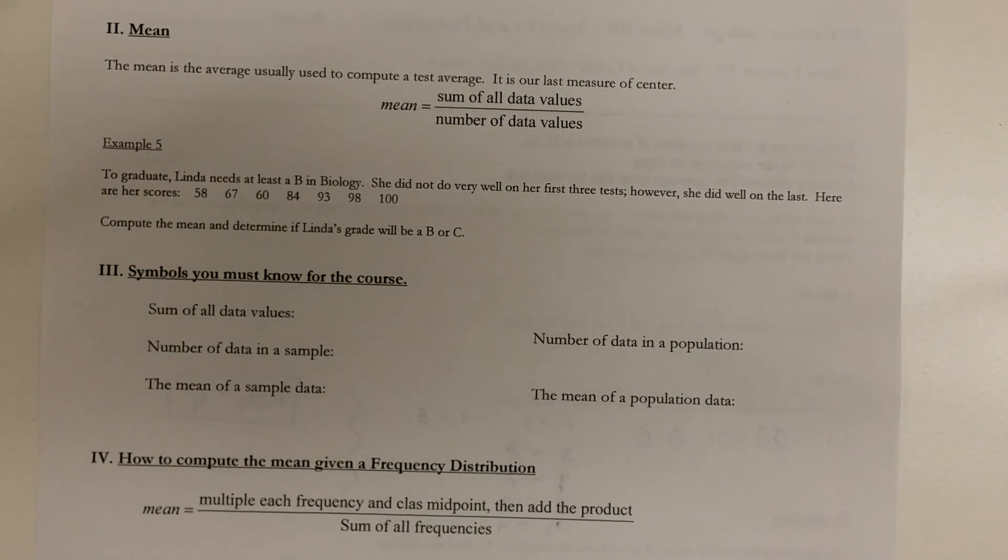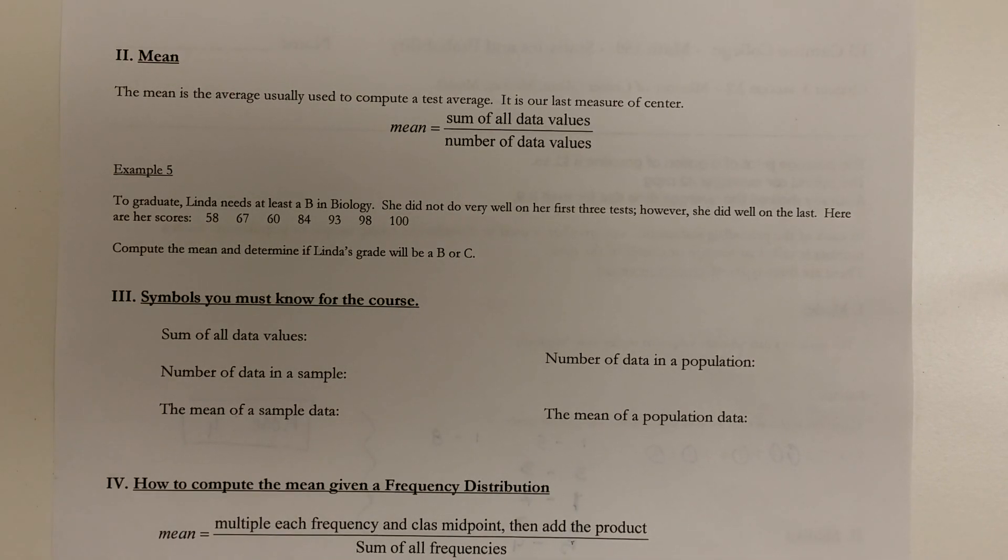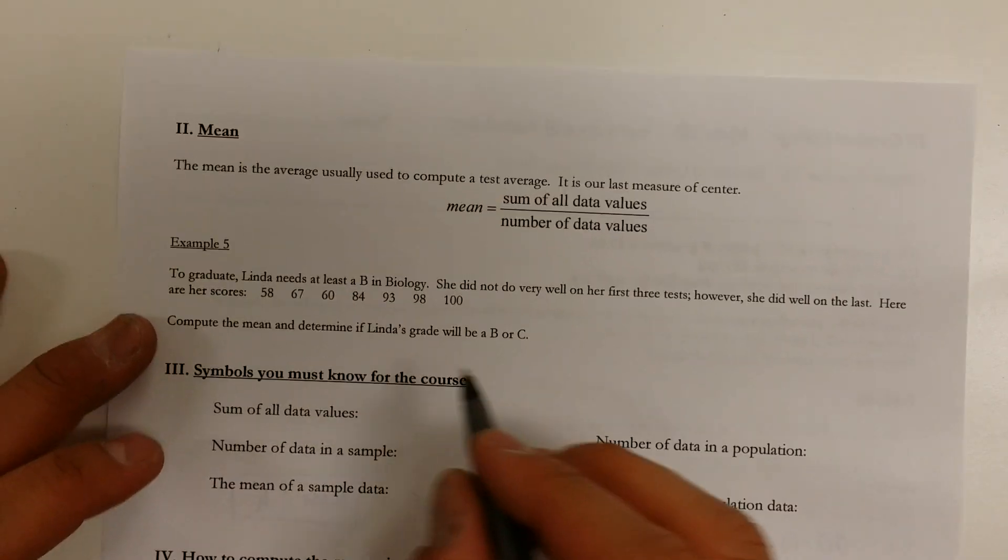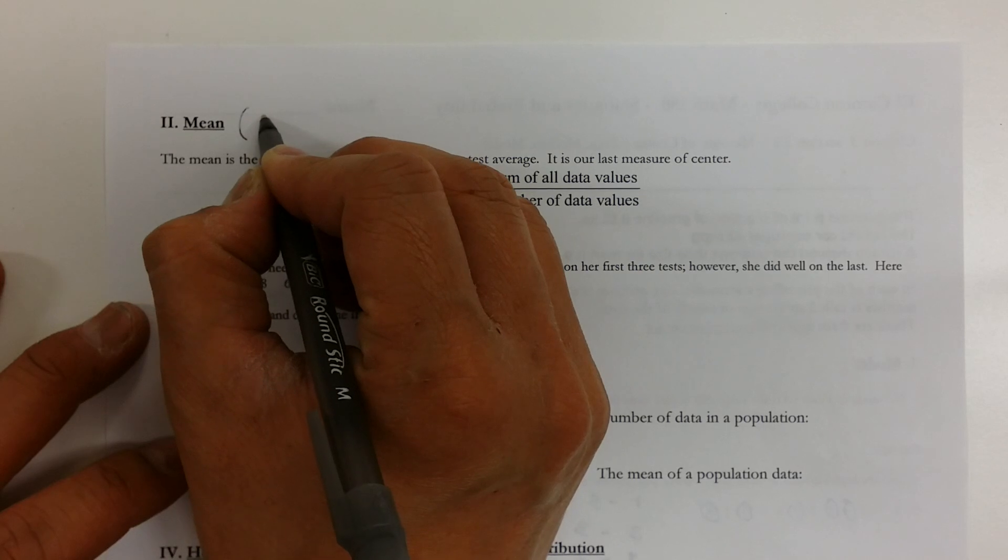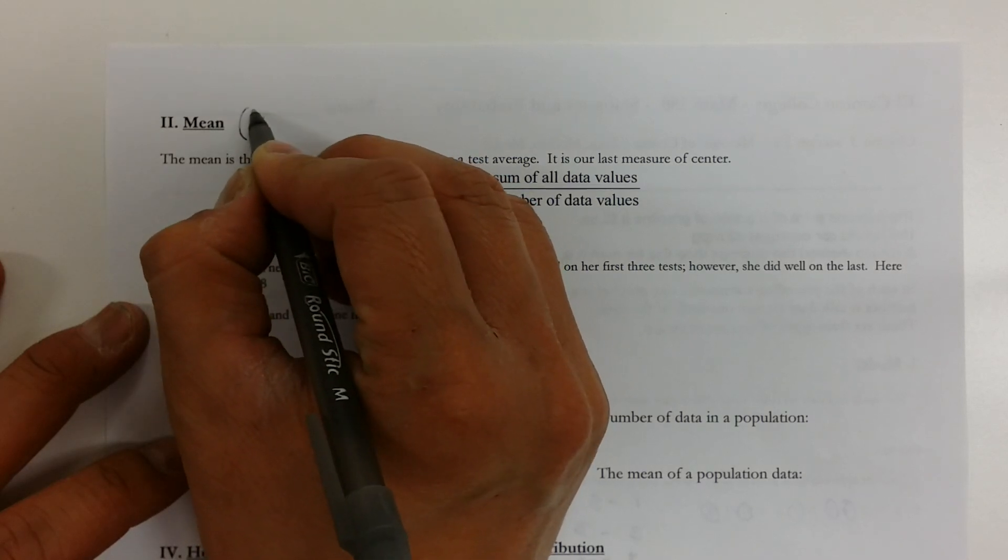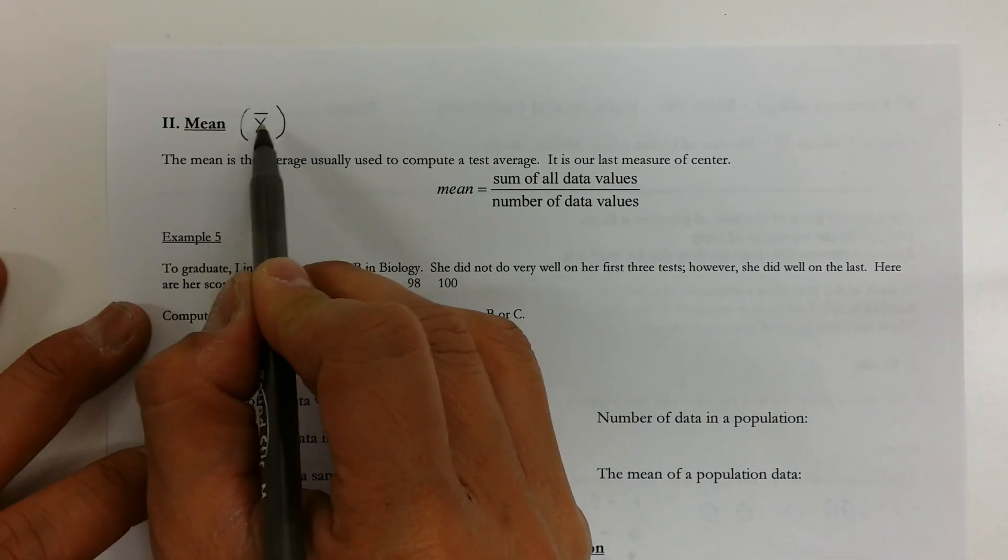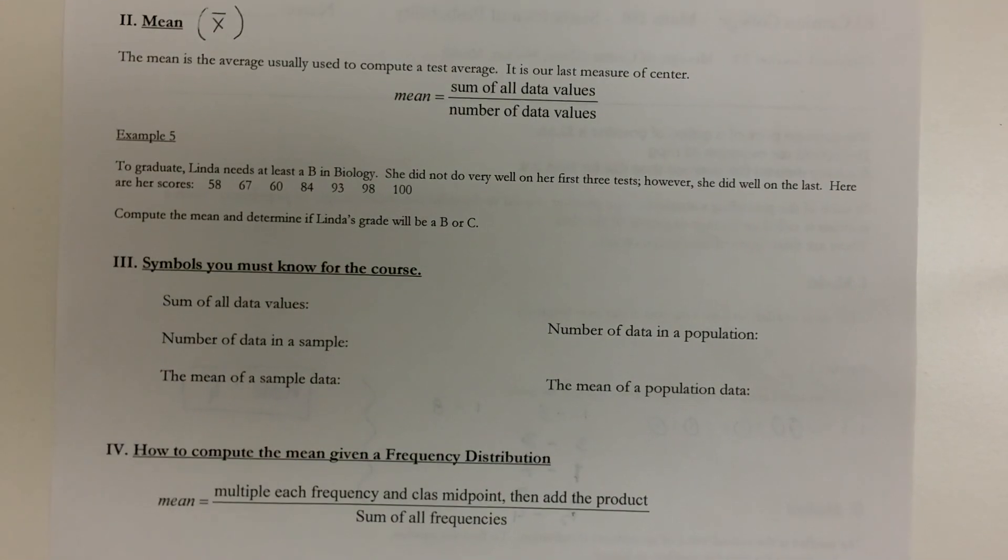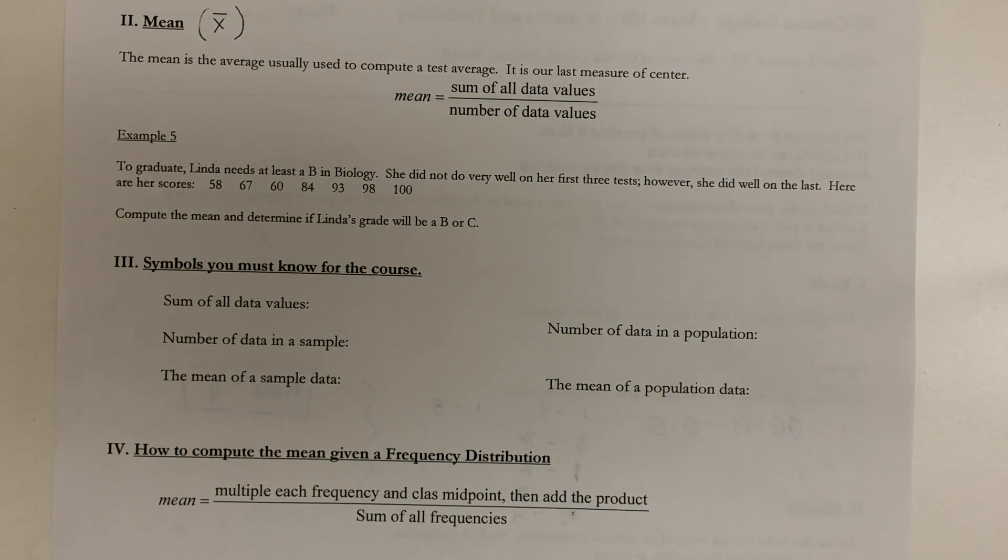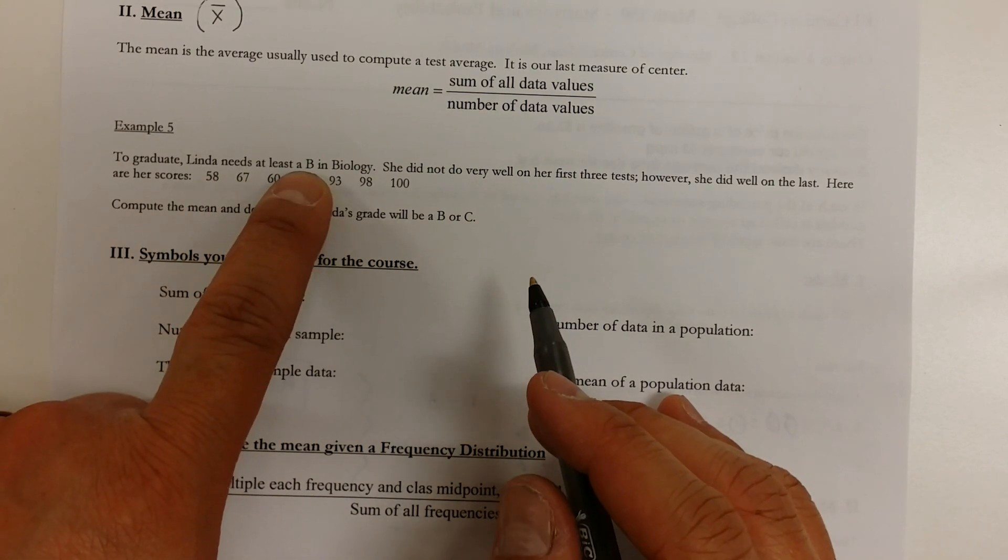Let me walk you through an example on how to find the mean. By the way, I'm going to give you more variables or symbols later, but the symbol for the mean is the letter X with the little bar on top. This is really special. Whenever you see this symbol, it is referred to the mean. So what I want to do here is I want to find the mean for Linda to see whether or not she has a B in biology.